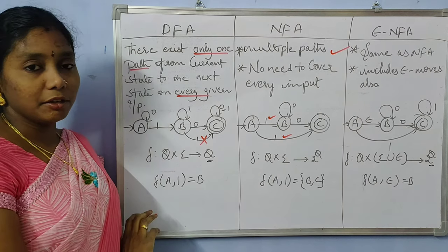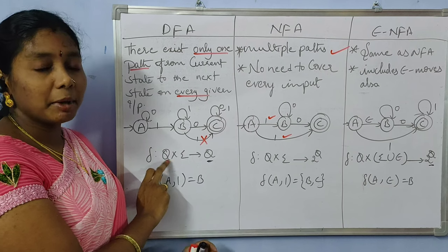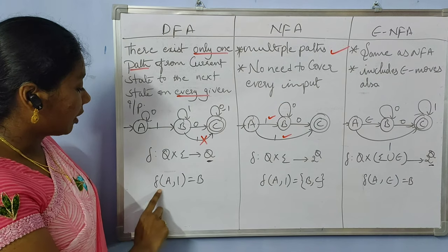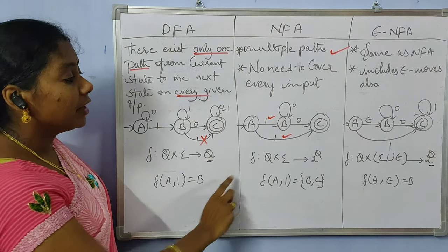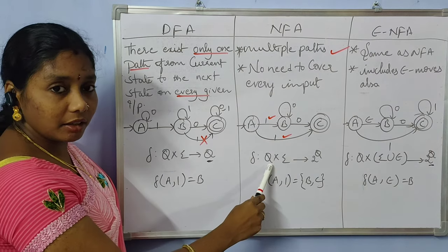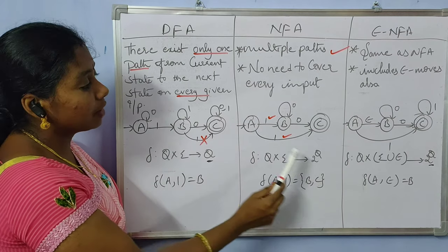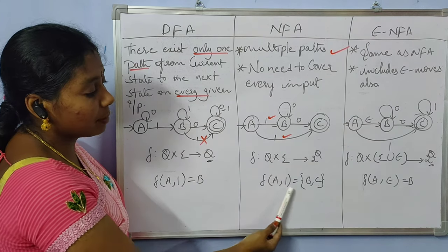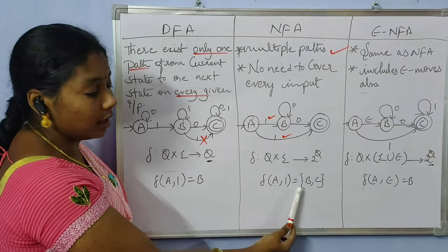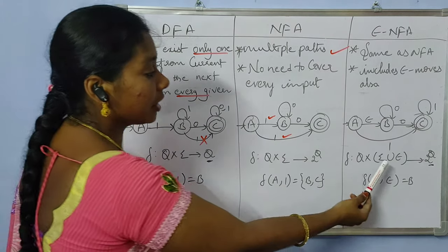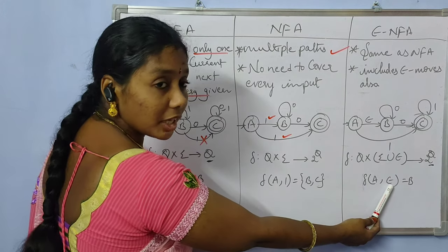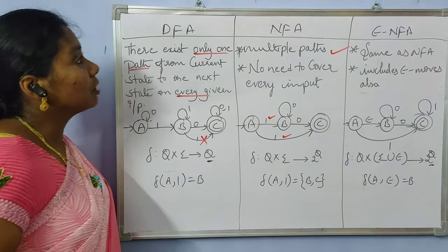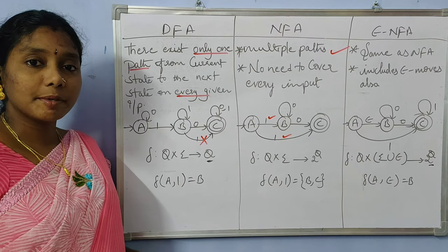Coming to the transition function: in DFA, from a particular state by taking a particular input, it goes to exactly one other state — for example, from A on input 1, it goes to state B. In NFA, from a state with a particular input, it can go to more than one state — from A on input 1, it goes to both B and C. In Epsilon NFA, even without taking any input, by considering the epsilon empty string, it can also transition to state B. This concludes the comparison of DFA, NFA, and Epsilon NFA.